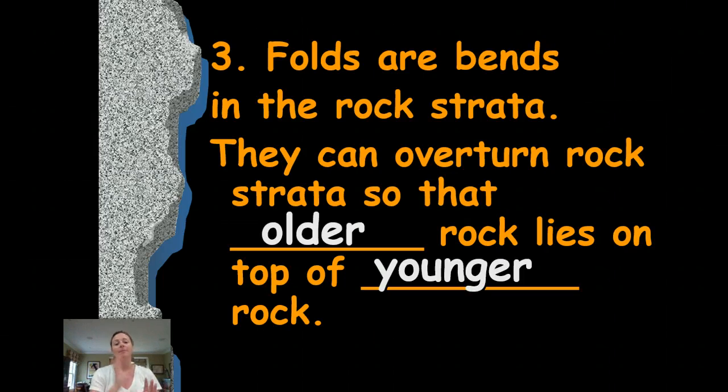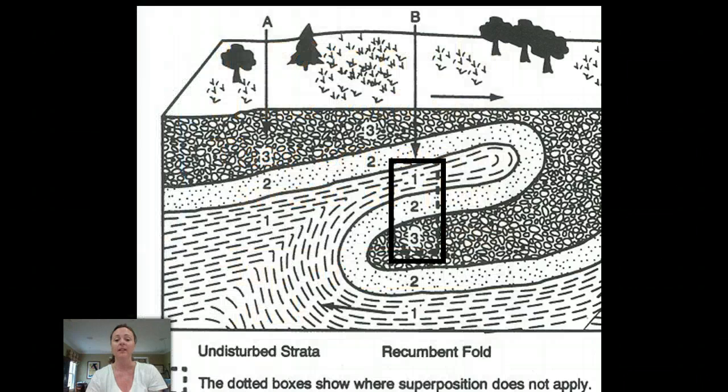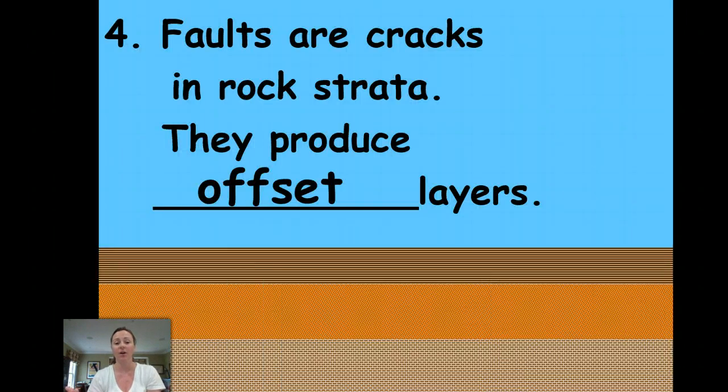But when we see a bend we can tell that the rock has had an event that occurred after the layers were formed. Let's look at this picture in your notes. You see that there's a rock layer and there's a bend. Well in this instance it looks as if the younger rock is underneath the older rock. However, we know because of the law that that's not the case. The overturn or the bend in that rock occurred after those rock layers were deposited.